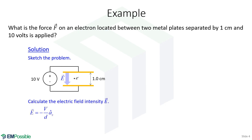So let's go ahead and calculate the electric field intensity. It is in the negative Z direction, so we put a negative and this â_z unit vector in the Z direction. But the magnitude is the applied voltage divided by the separation between the plates. We plug our numbers in and we get minus 1000 volts per meter — the minus is to remind us it's actually in the negative Z direction.